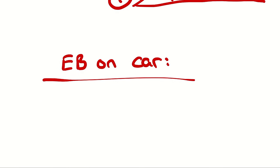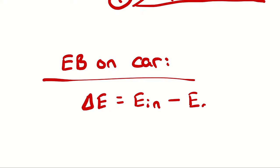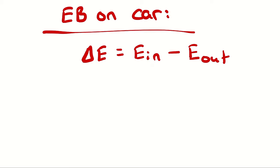Like with all energy balances, we start with delta E equals E-in minus E-out. For our purposes here, we aren't distinguishing between different subcategories of energy entering or exiting — we are just treating it as energy entering the system and increasing its kinetic and potential energy. So the E-in doesn't have to be broken apart; it's just the category we are solving for.